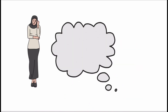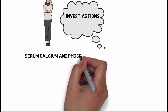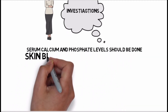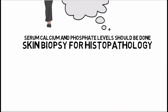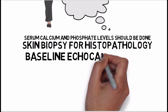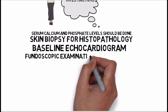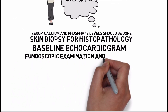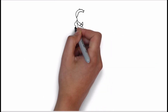Now let's look at investigations. Serum calcium and phosphate levels should be done — they are normal in a patient with pseudoxanthoma elasticum. Skin biopsy for histopathology will show the changes described. A baseline echocardiogram should be done to assess cardiac involvement. Fundoscopic examination should be performed to identify the ocular signs, and visual acuity should be checked in every patient.